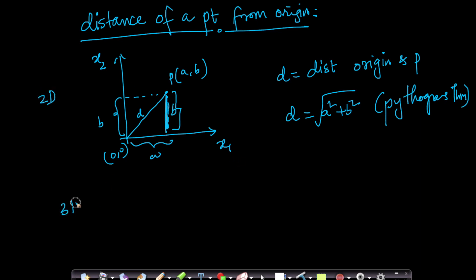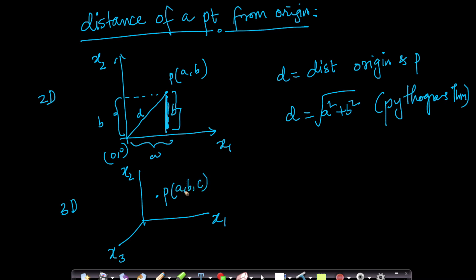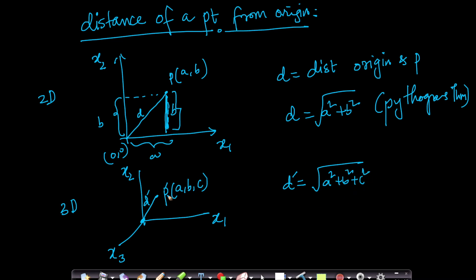What about 3D? In 3D, I have x1, x2, and x3, and if I have a point p with three components a, b, c, then by simply applying the Pythagorean theorem, the distance d from the origin is the square root of a² + b² + c². This can be proven using Pythagorean theorem applied multiple times.